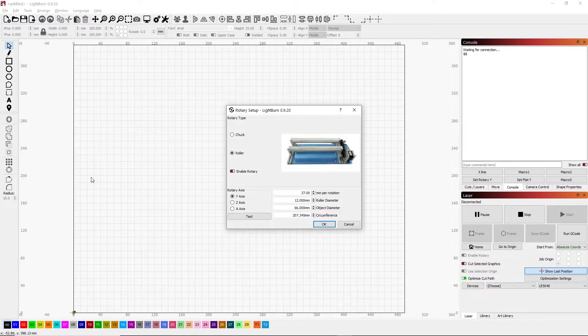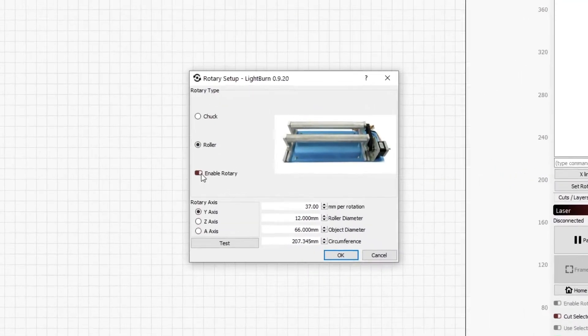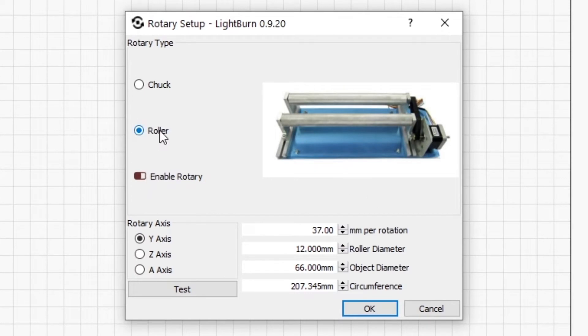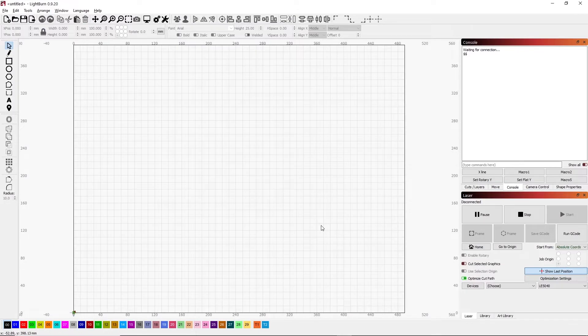Then we go under the Rotary Setup where we can enable or disable, set to the type of roller, which axis, the millimeters per rotation (I'll explain later how I got that number), the size of the roller diameter, the diameter of your object or circumference. Either the diameter or the circumference you key in, it'll calculate the other. The 12mm roller diameter was given by the manufacturer.